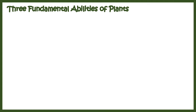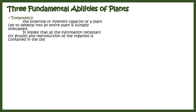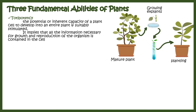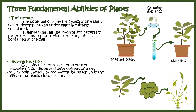Before we move on to plant tissue culture techniques, we should understand three fundamental abilities of a plant cell which make it possible to culture in vitro. The first capability is known as totipotency — the potential of a plant cell to give rise to an entire plant, similar to a totipotent stem cell which can give rise to an entire organism. Any cell from a plant can be cultured and ultimately induced to form a mature plant.